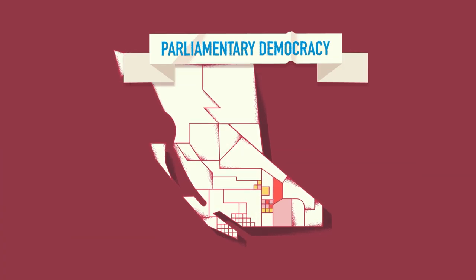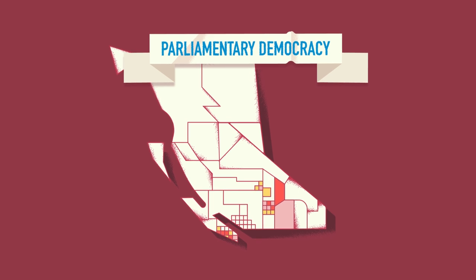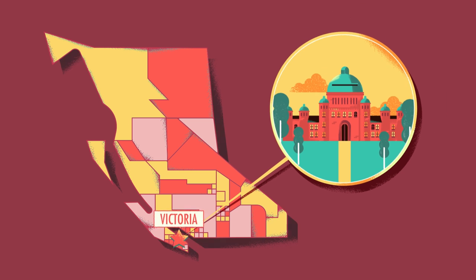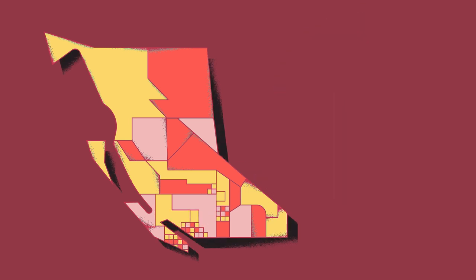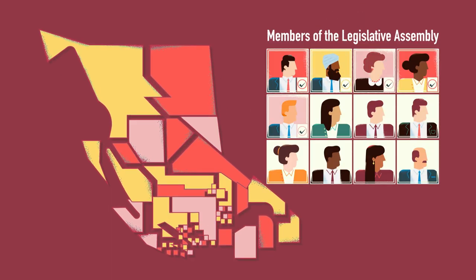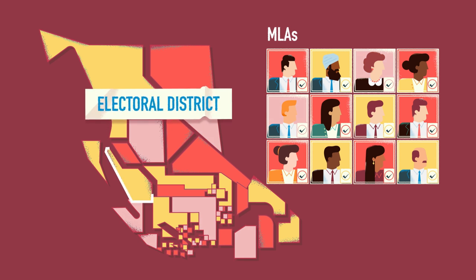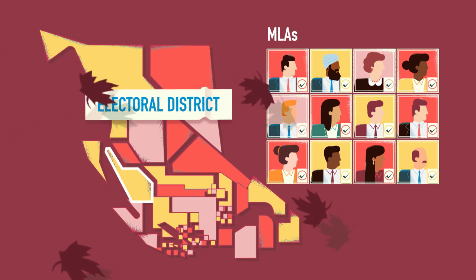British Columbia is a parliamentary democracy. This means that we elect people to represent us in Victoria at our provincial legislature. These elected representatives are called members of the Legislative Assembly, MLAs for short. They each represent a different area called an electoral district, also known as a constituency.